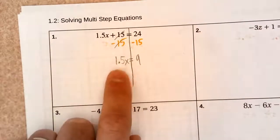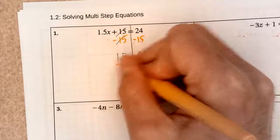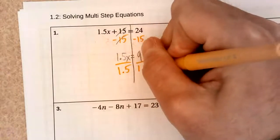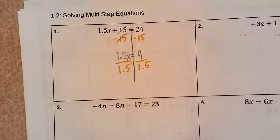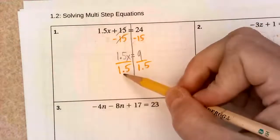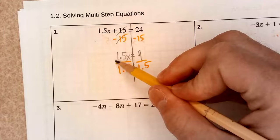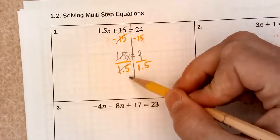Let's divide both sides by 1.5. 1.5 divided by 1.5 is 1. I'm left with 1x. Let's carry down that x.